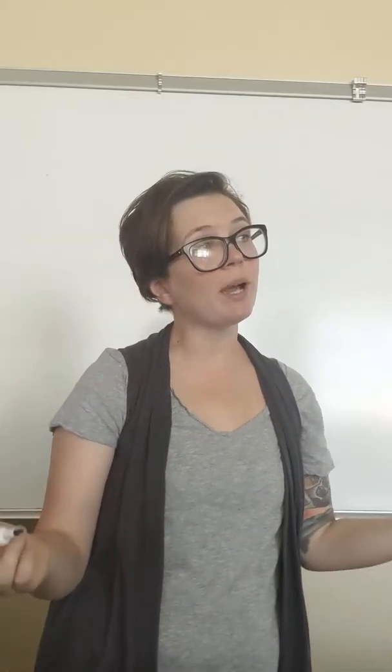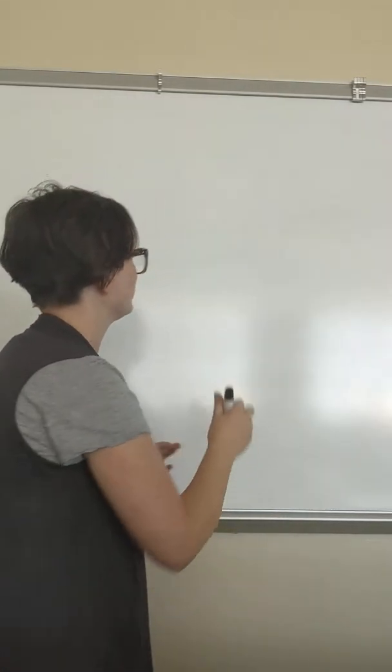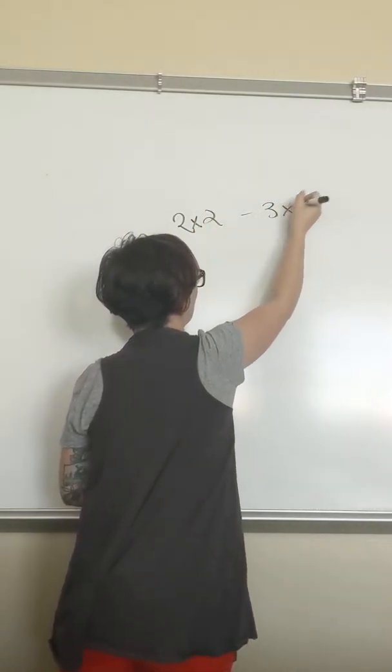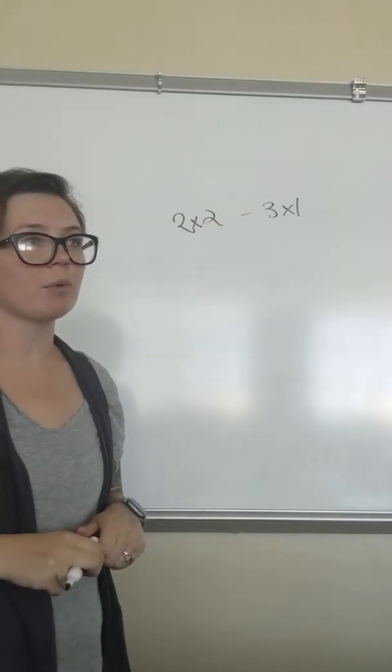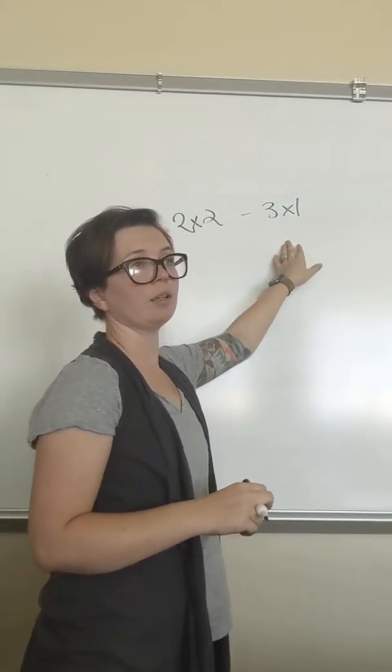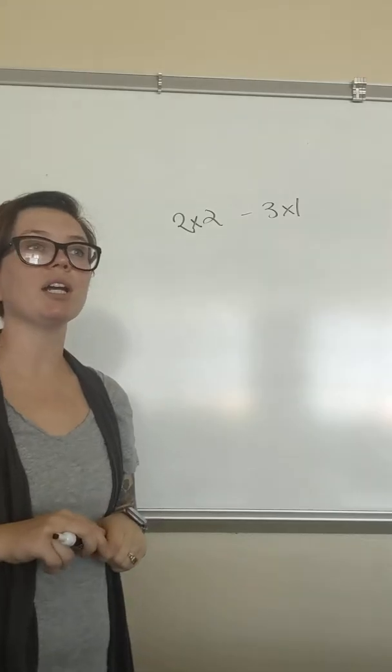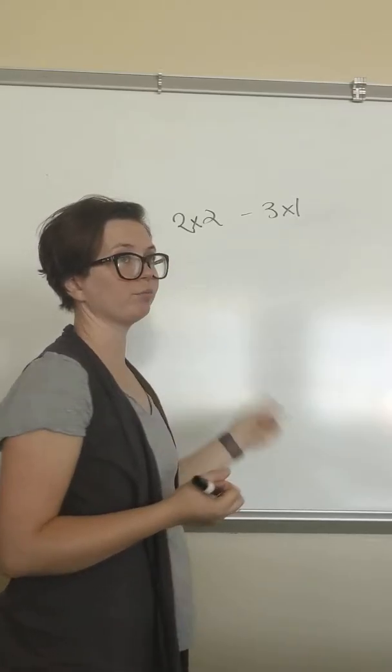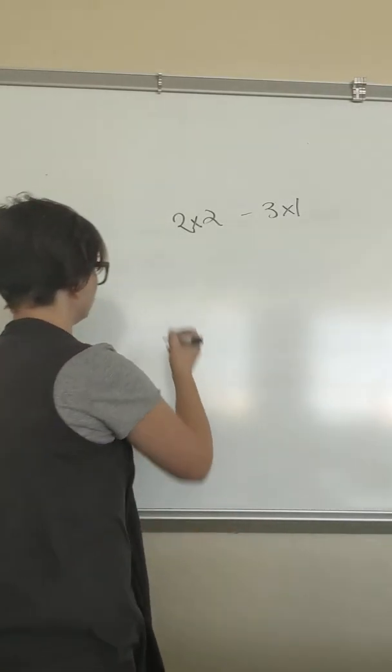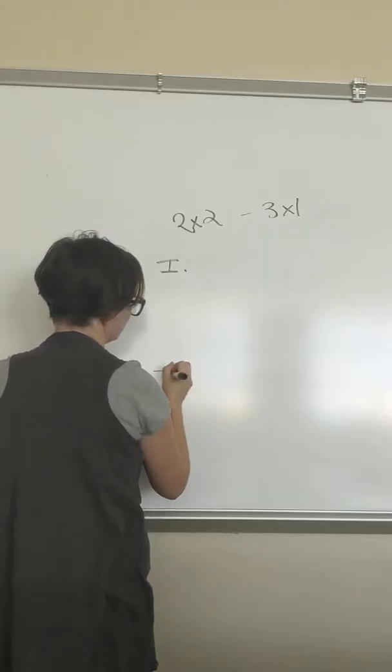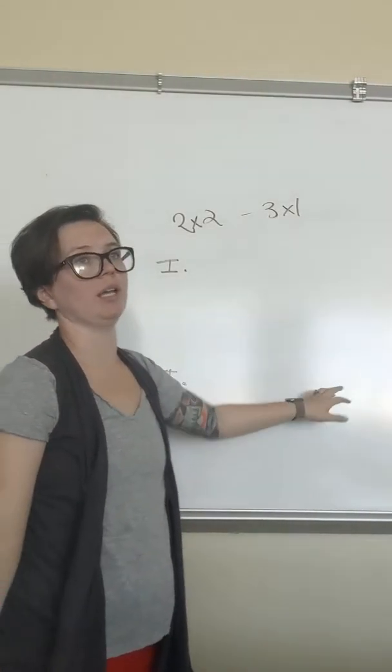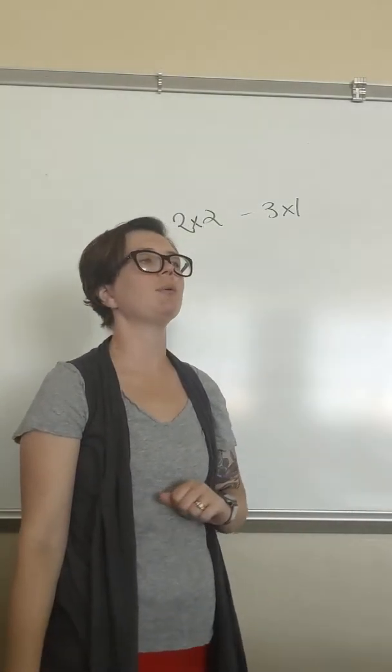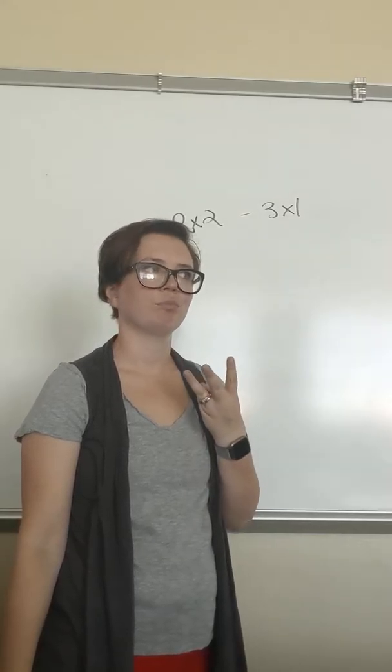The differences between these are called two by two and three by one structure. You need to know the difference. So two by two and three by one. The first number, the two or the three, stands for how many body points you have. So in the case of a two by two, how many body points would we have? Two. In a three by one, how many body points do we have? Three.